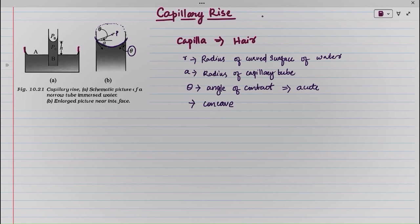If Pi is the pressure inside the circle or in that region, and P0 is the pressure inside the liquid, then the pressure difference Pi minus P0 can be written as 2S by R. This equation is derived in the previous section.